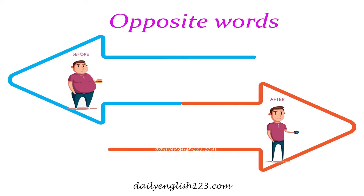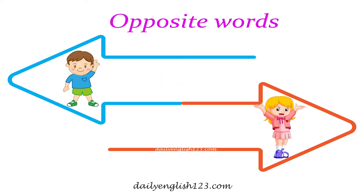Number 2: Before is the opposite of after. Number 3: Boy is the opposite of girl.